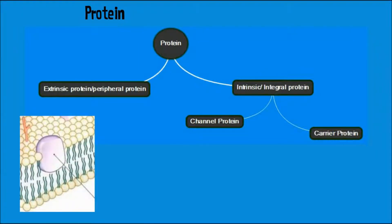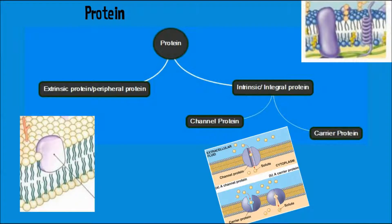Another major component is protein. There are two types: extrinsic protein and intrinsic protein. Extrinsic proteins are embedded in only one layer of the phospholipid bilayer. Intrinsic proteins span throughout the entire bilayer — they integrate both layers, which is why they are also called integral proteins.